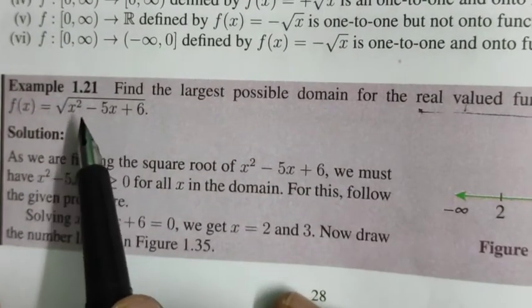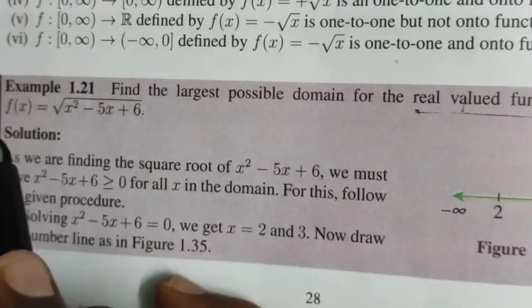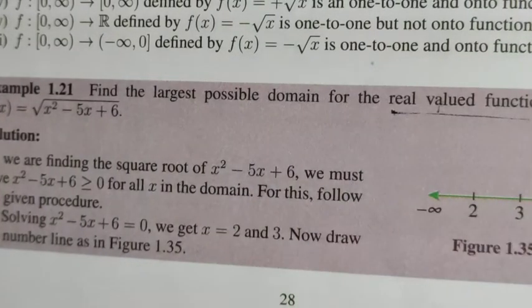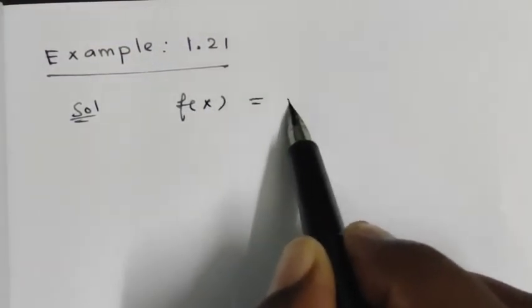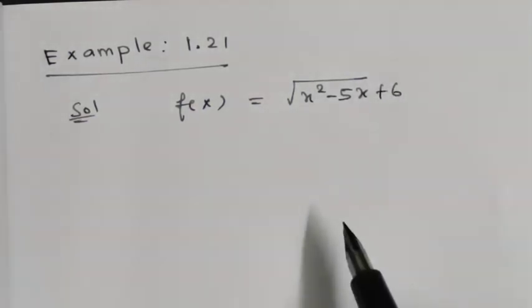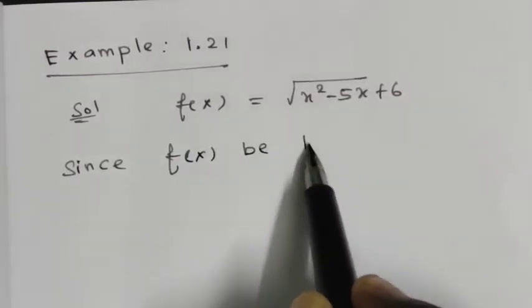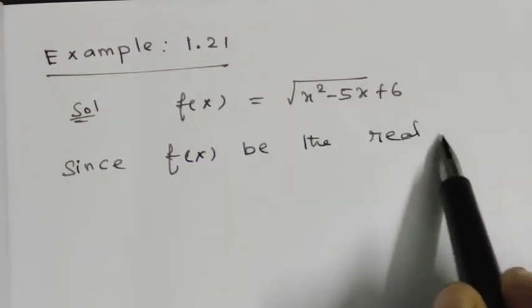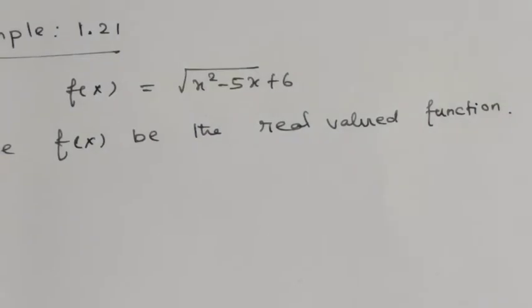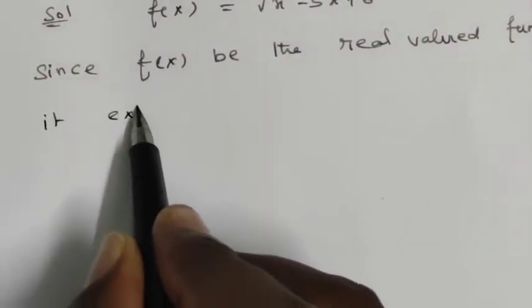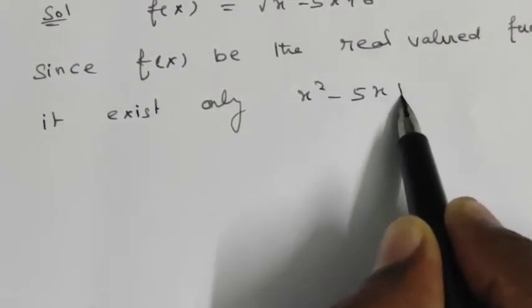f(x) is equal to root of x squared minus 5x plus 6. Since f(x) is a real-valued function, we need to find the domain. f(x) exists only when x squared minus 5x plus 6 is greater than or equal to 0.